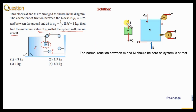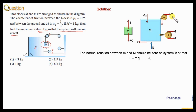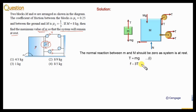Now consider the free body diagram of small m. We can write the vertical equilibrium equation: capital T equals small mg — first equation. For the horizontal equilibrium of capital M, we can write small f equal to T plus T plus T, that means small f equals 3 multiplied by capital T. Since capital T equals small mg, this gives small f equal to 3mg — second equation.